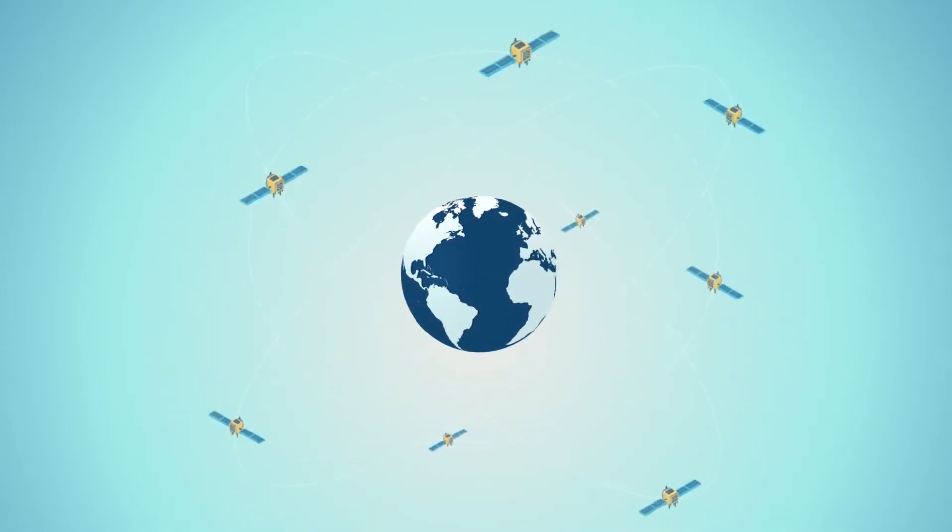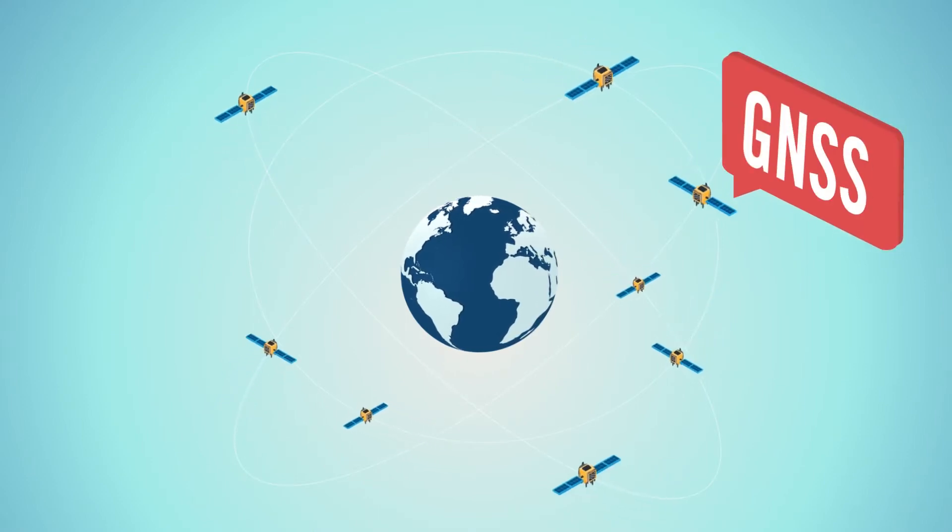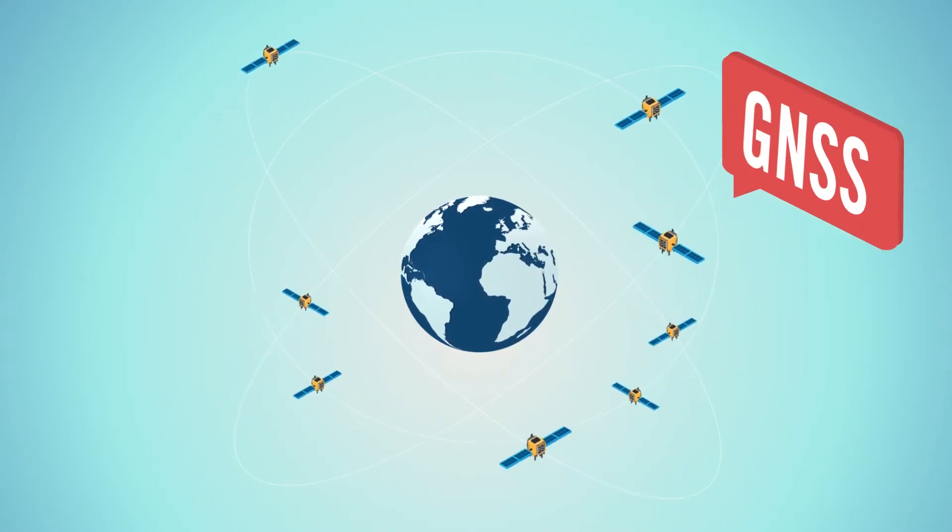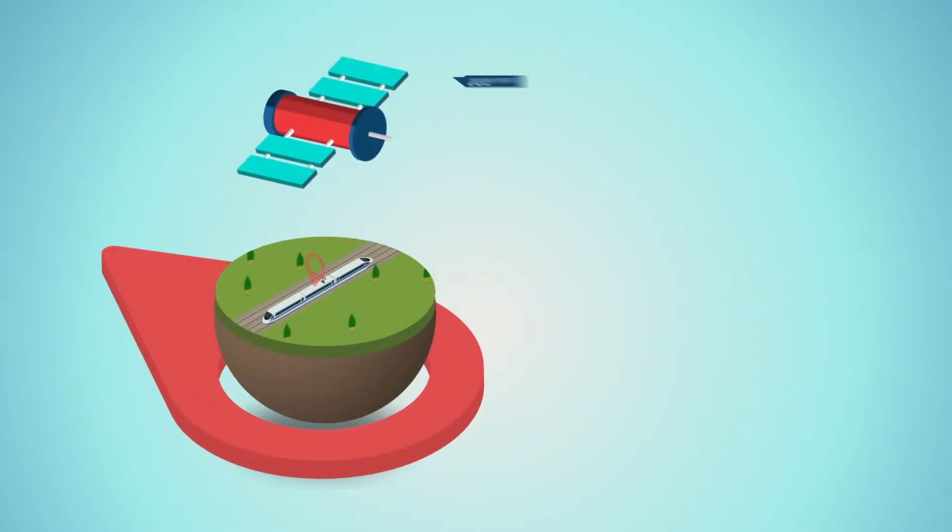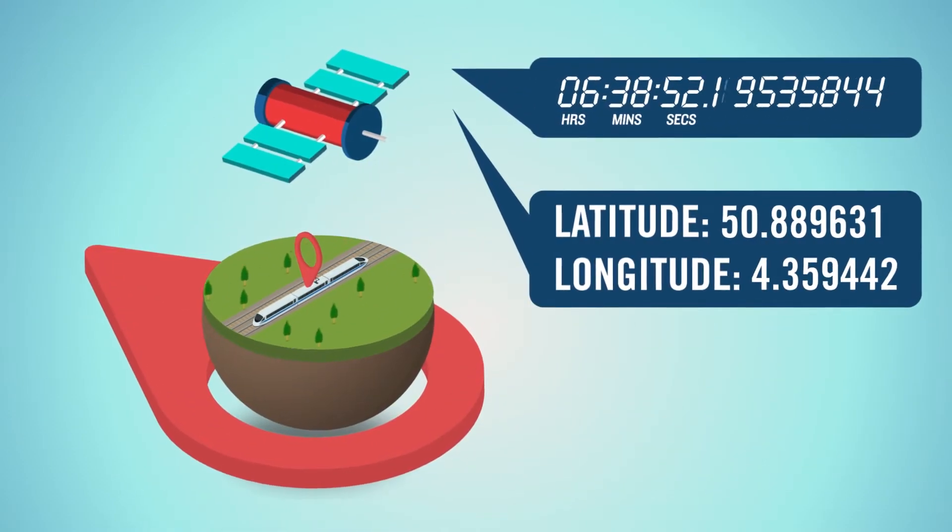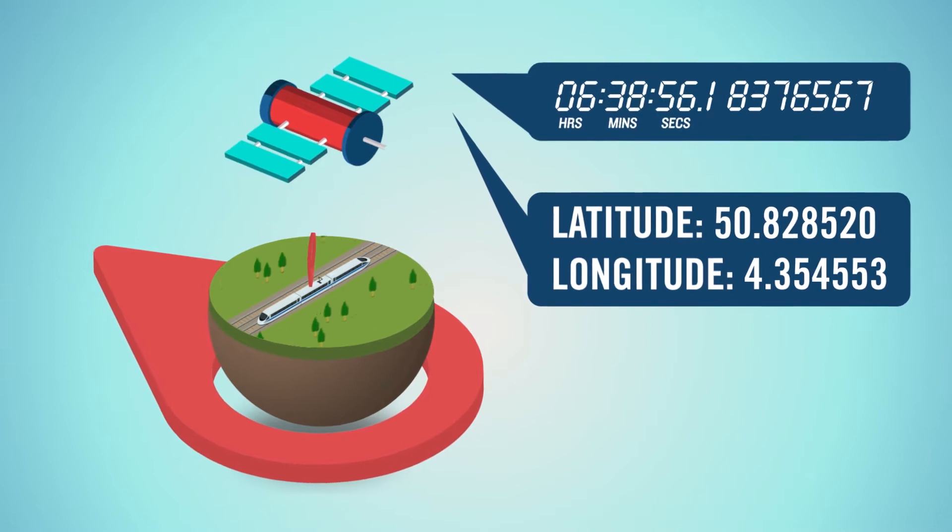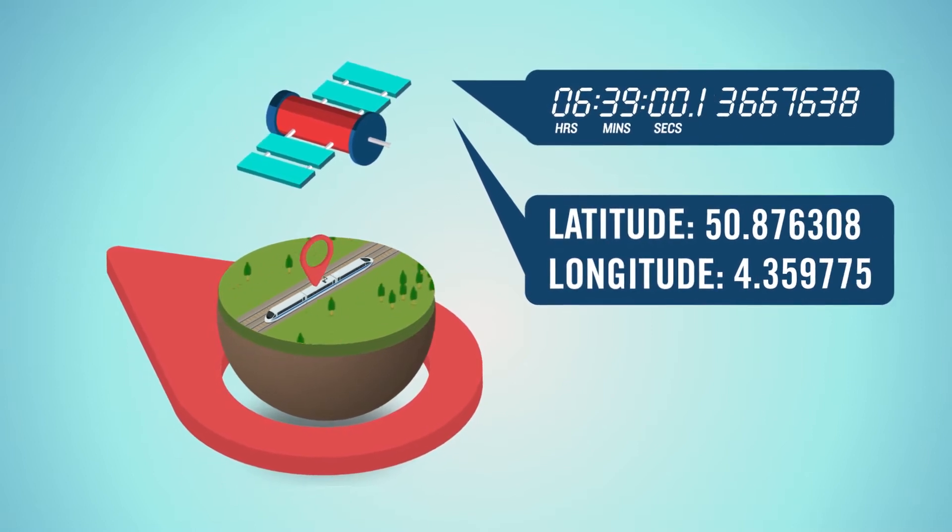Today's world relies on the precision of Global Navigation Satellite Systems, or GNSS. EGNOS and GALILEO pinpoint the location of people or objects, and provide extremely accurate timing.